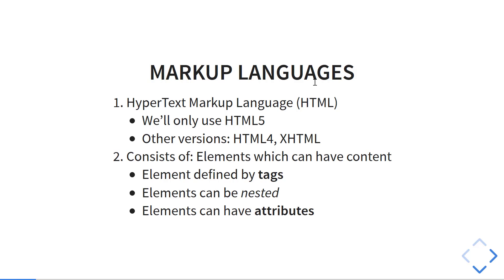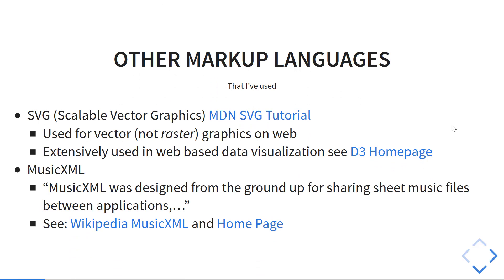What are these markup languages? They consist of elements which can have contents. Elements are defined by tags, they can be nested, and they can have attributes. Other markup languages I use a lot include Scalable Vector Graphics, SVG, which is used on the web for tons of data visualization.